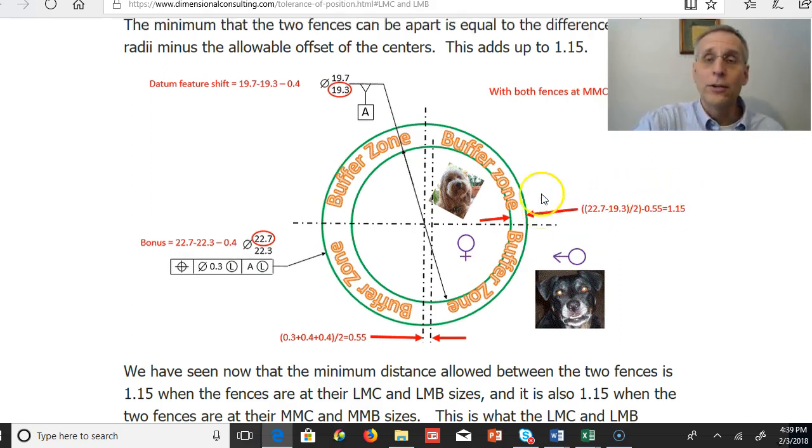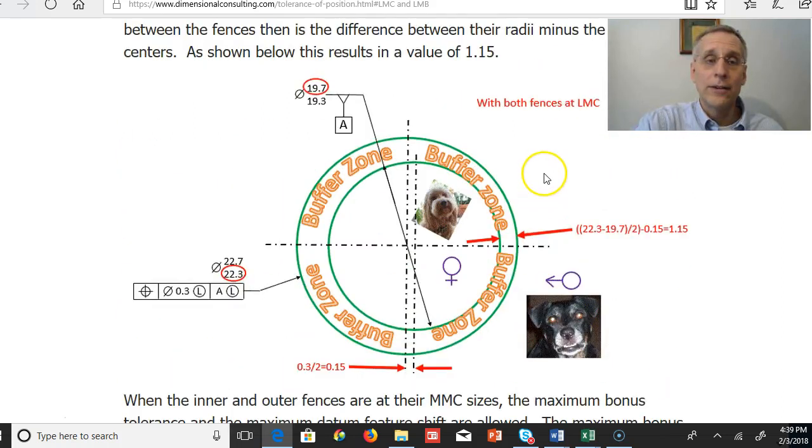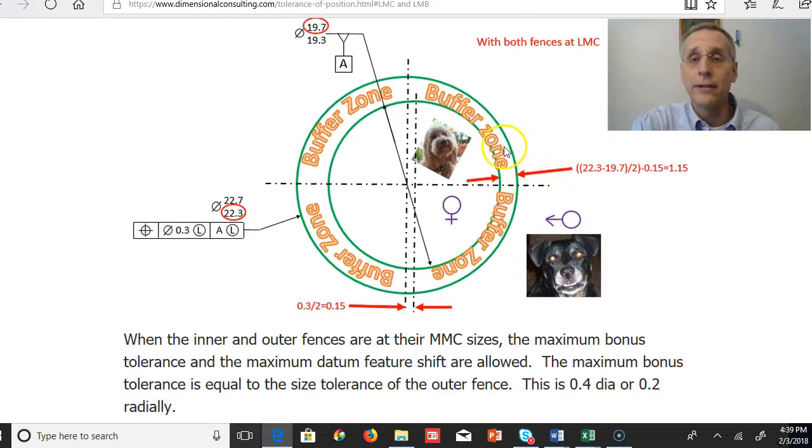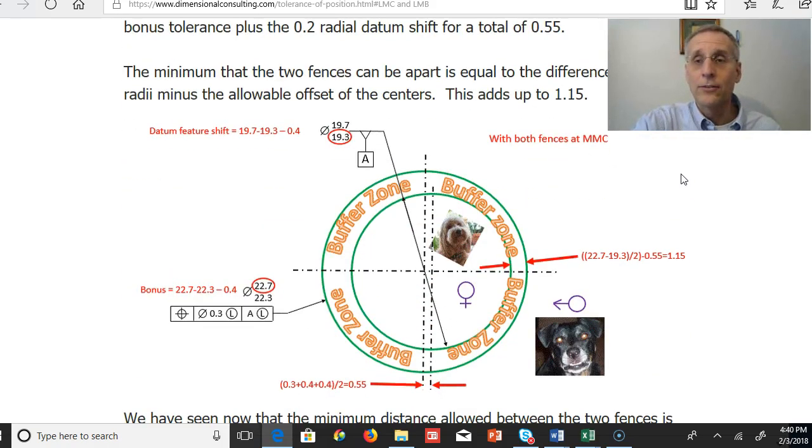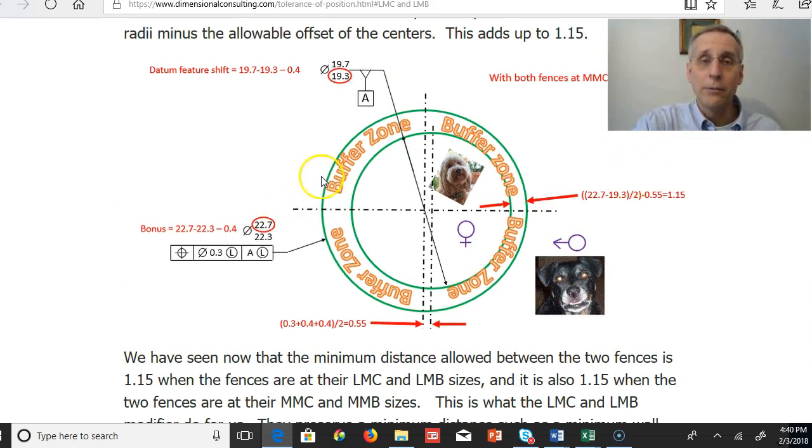So we saw that at one extreme, when the fences are at the LMC and LMB sizes, our minimum distance is 1.15. At the other extreme, when the sizes are MMC and MMB, the minimum distance is 1.15. And if you take more cases, you'll find that no matter what the sizes are, as long as they're within their allowable size tolerances, you will never have a minimum distance that goes less than 1.15.